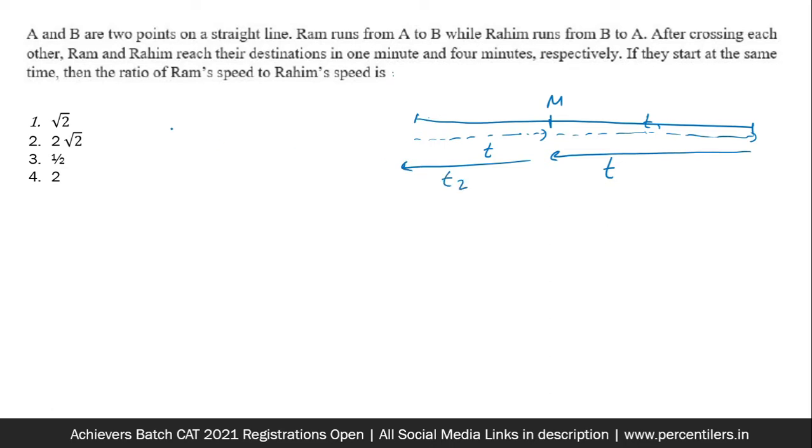If two people start together and then meet at a certain point, now this person takes t time, this person also takes t time to reach, and after meeting the first person takes t1 time and the second person takes t2 time, then there is a formula which says t1 times t2 equals t squared. Another thing, if v1 was the speed of this person and v2 was the speed of this person, then v1 over v2 is equal to square root of t2 over t1.